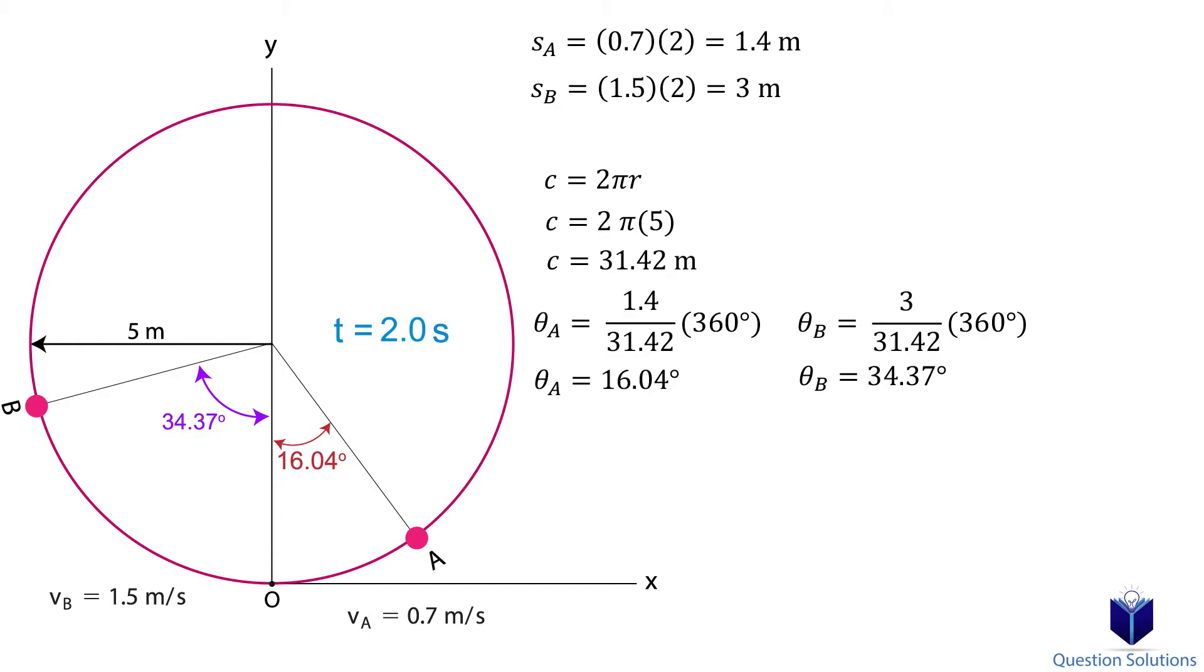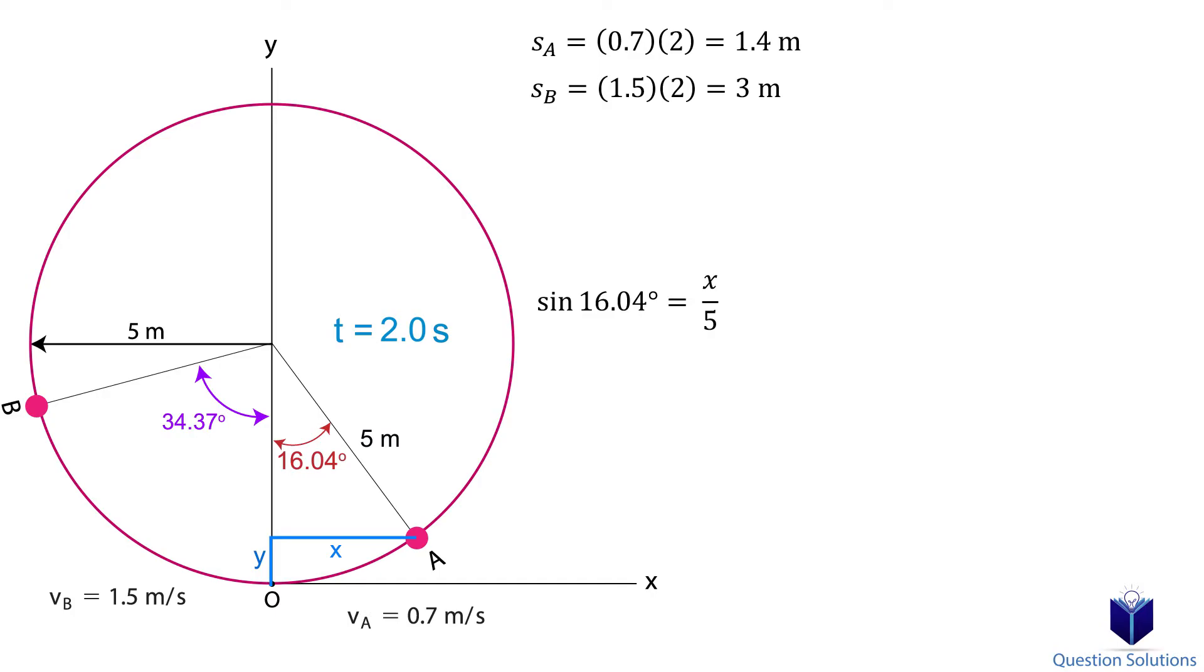Now let's look closely at our diagram. We need a position vector from the origin to A. Let's first think about the x-axis. That can be found using sine, which is opposite over hypotenuse. So we have sine 16.04 degrees is equal to x over 5. Solving gives us the x length.